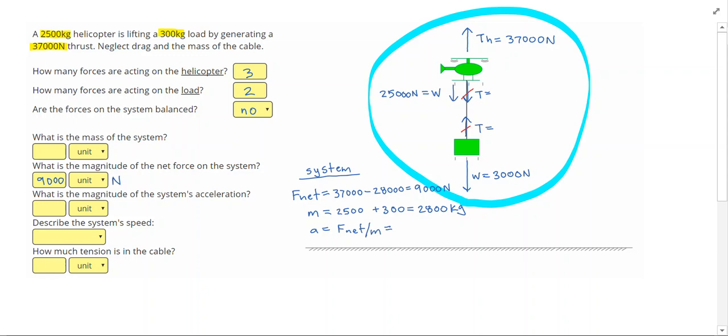which gives me 9,000, divided by 2800, and that's 3.21 meters per second squared.